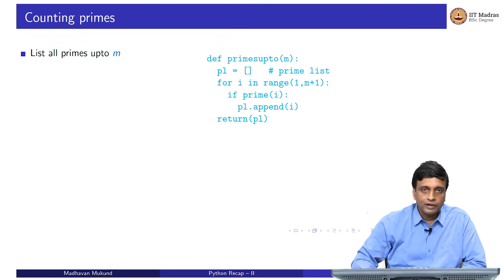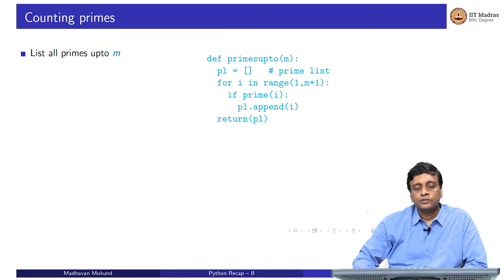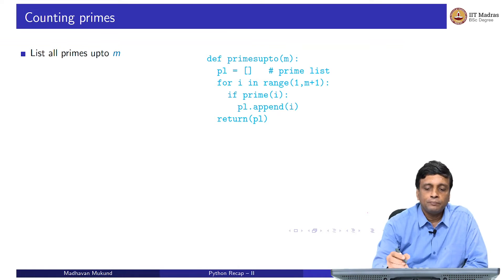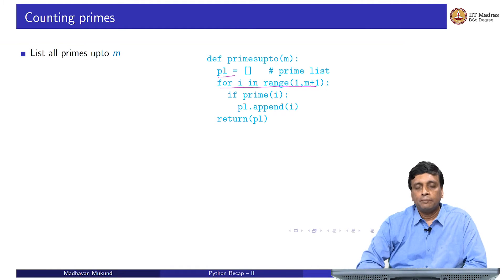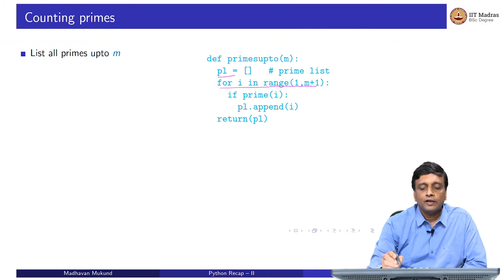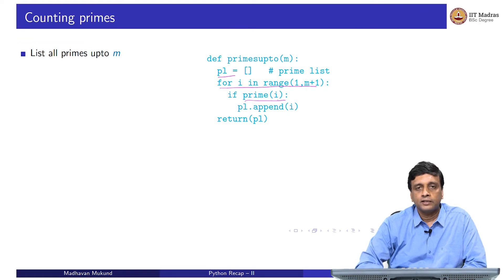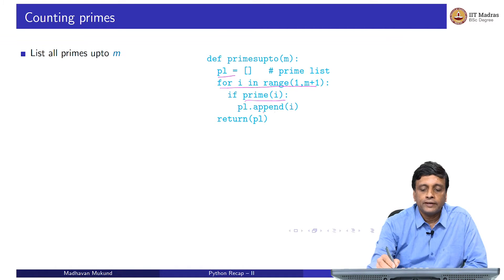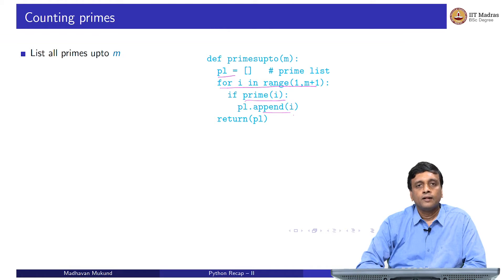Now that we know how to check a given prime, let us see what we can do with this. We might ask: what are all the primes up to 100, or up to 1000? To list all primes up to some number m, we start with an empty list and run a for loop from 1 to m+1. For each i, if the number is prime, we append it to the list of primes.